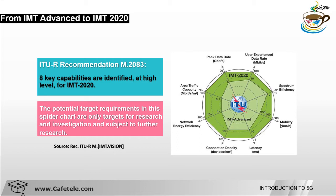Latency is also a main important capability. In IMT Advanced it was 10 ms, but in 5G or IMT-2020 it leads to 1 ms. Latency basically defines the contribution by the radio network to the time from when the source sends a packet to when the destination receives it — essentially the time a packet takes from the base station to the subscriber.